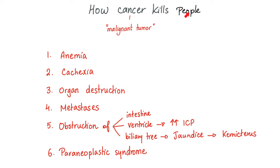How cancer kills people: anemia, cachexia, organ destruction, metastases, obstruction of organs, tubes, canals, ducts, ventricles. It can also secrete things, and we call this paraneoplastic syndrome. The stuff secreted by the cancer can kill you.